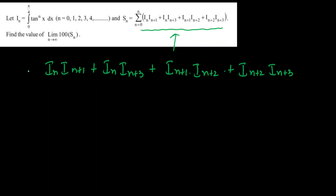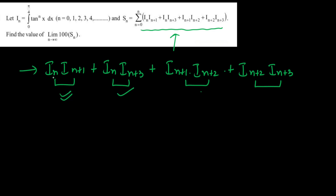Now the problem is, if you directly put values here, as you can see the difference between indexes is 1, and here the difference between indexes is 2. Again, difference between indexes is 1 and difference between index is 2. So if you calculate the reduction formula for I(n), the values that come will be I(n) and I(n-2) — that means the difference will be 2. These two terms with difference 1 will be difficult to calculate: I(n) and I(n+1).